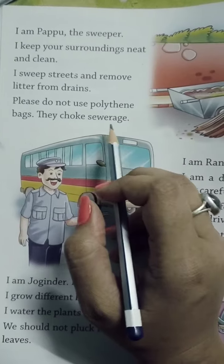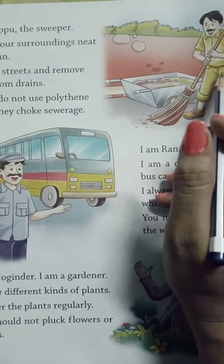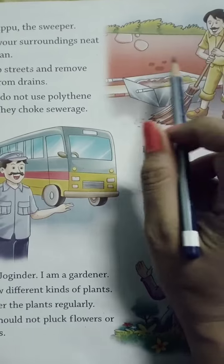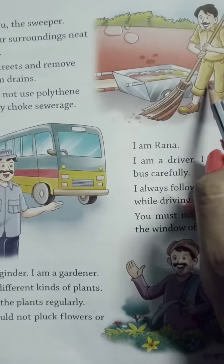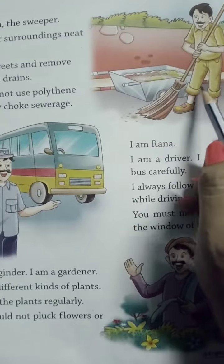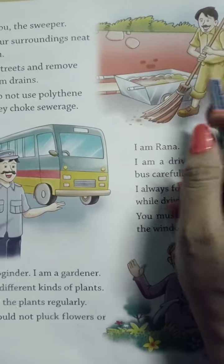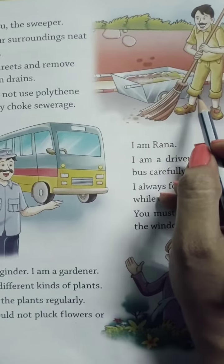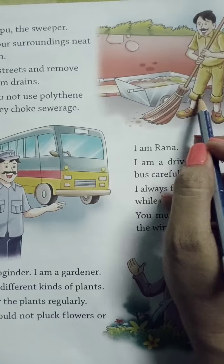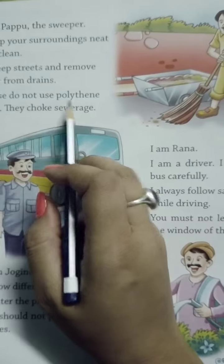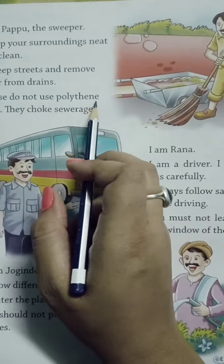They block sewerage. Who is he? Papu. This is a sweeper. What do we do? We do not use polythene bags.